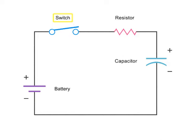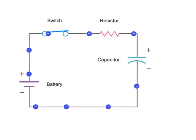When the switch is closed, electrons flow and charge builds up on the capacitor's plates. This causes the voltage across the capacitor to increase.